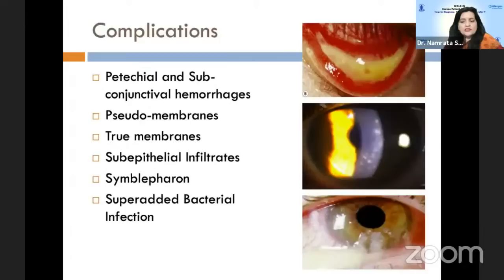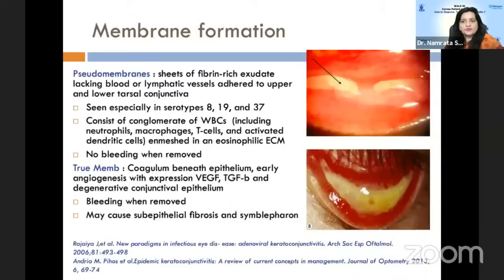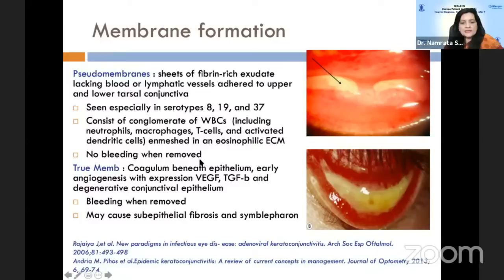The disease tends to have a self-limiting course, but sometimes it doesn't heal. In those cases, there can be complications such as pseudomembranes, true membranes, sub-epithelial infiltrates, symblepharon formation, and superadded bacterial infection. Pseudomembranes are classically sheets of fibrin-rich exudate without blood or lymphatic vessels, consisting of conglomerates of WBC and macrophages — when you remove them there is no bleeding. True membranes, on the other hand, have a coagulum beneath the epithelium with early angiogenesis; when removed, there is classically bleeding, which may cause sub-epithelial fibrosis and symblepharon formation.